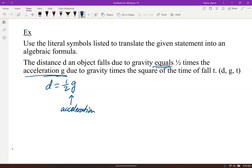times the square of the fall t. So t is being squared, square of the time. There is the verbal statement given as an algebraic formula.